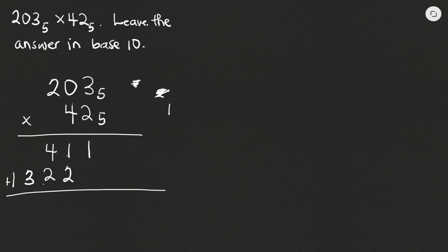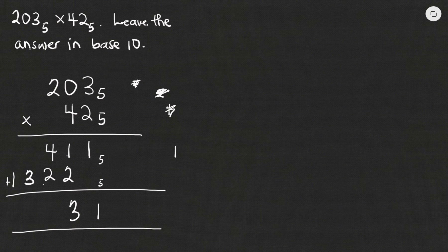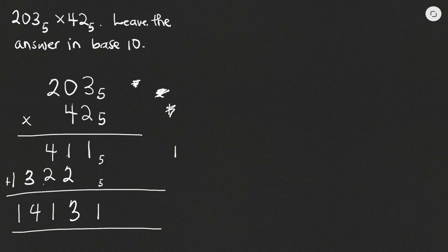Now we add everything. 1 plus nothing gives 1. Then 1 plus 2 gives 3, so we write 3. Then 4 plus 2 is 6 — since we are in base 5, we can't write 6. 5 goes into 6 once, remainder 1; we carry the 1. So 3 plus the carried 1 is 4, we write 4. Then 1 plus nothing is 1. So our answer after multiplying 203 base 5 by 42 base 5 is 14131 base 5.